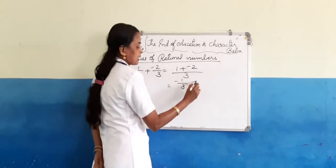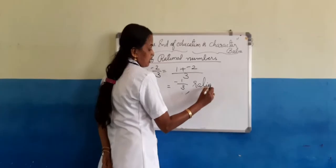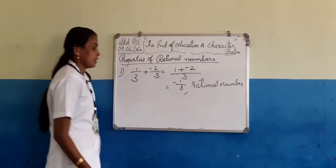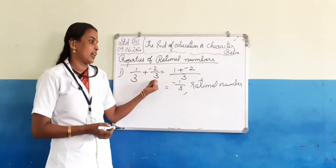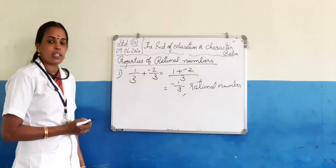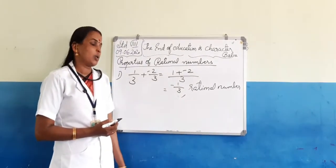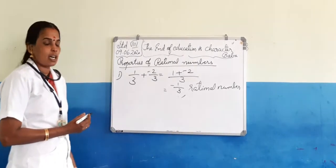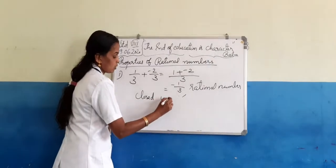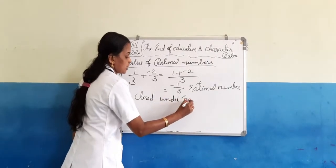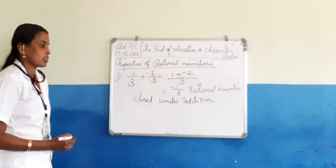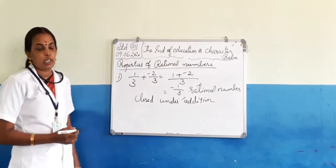So we will get negative 1 by 3, which is also a rational number. We added two rational numbers and got the sum as again a rational number. This is true for every rational number, so we can say that rational numbers are closed under addition. This is called the closure property of rational numbers.